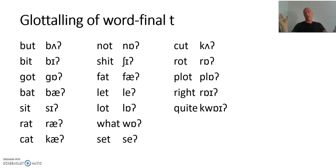The most prominent or the most frequent occurrence of final glottaling is final T-glottaling. Because the words where it occurs, they are so frequent. And here we are: but, bit, got, bat, sit, rat, cat, not, shit, fat, let, lot, what, set, cut, rot, plot, right, quiet. Here we go. Something like that. Very frequent words. And therefore, yes, there it is. But this is not only cockney. You find it in a lot of accents.